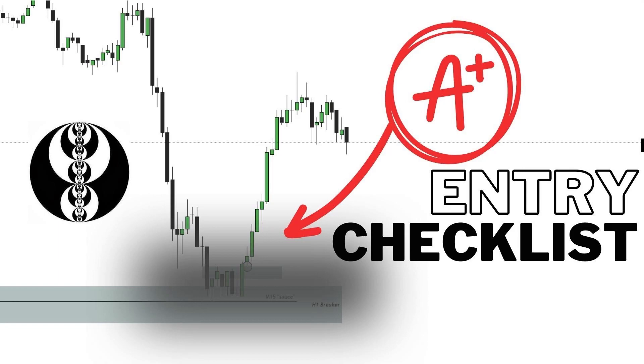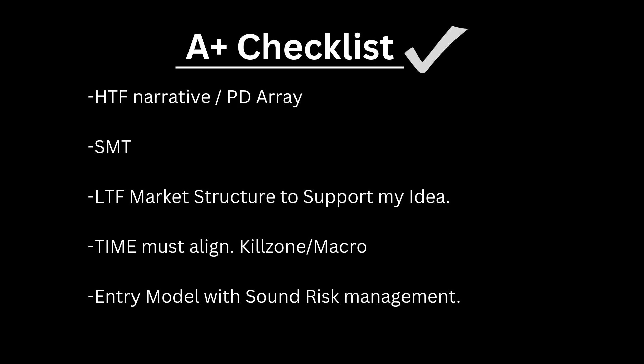What's going on everybody, it's Lundo2k. In this video we're going to go through my A+ entry checklist. First, you have to have a narrative as to why price is going to go where it's going to go. Second, I need a higher time frame PD array — I kind of put those two together — so that could be a fair value gap, order block, breaker, anything like that.